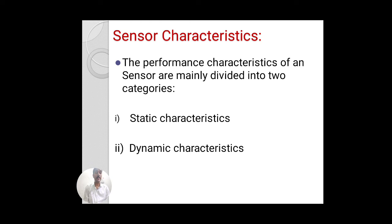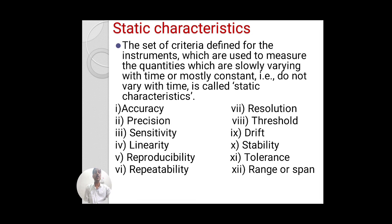Sensors have some characteristics. Why do we want to study these characteristics? When we choose a sensor for any application, we have to look at certain performance characteristics to determine if it is suitable for our application. These performance characteristics of sensors are divided into two categories: the first is static characteristics and the second is dynamic characteristics.